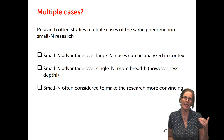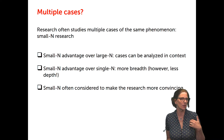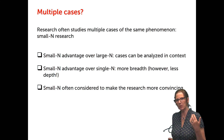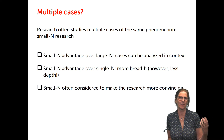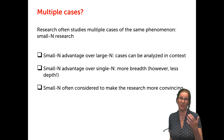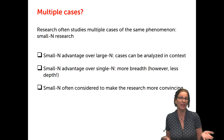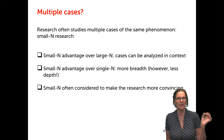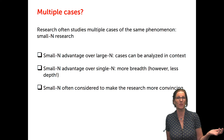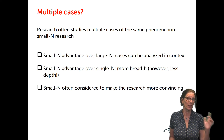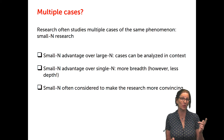Another reason why small-n cases is often considered is that it can make the research more convincing. If we want to change a particular policy, policy makers may not buy conclusions based on a single case. However, what is not a good reason to do multiple cases is simply because everyone else is doing it. You have to have a good reason to choose — or not to choose — to work with multiple cases.